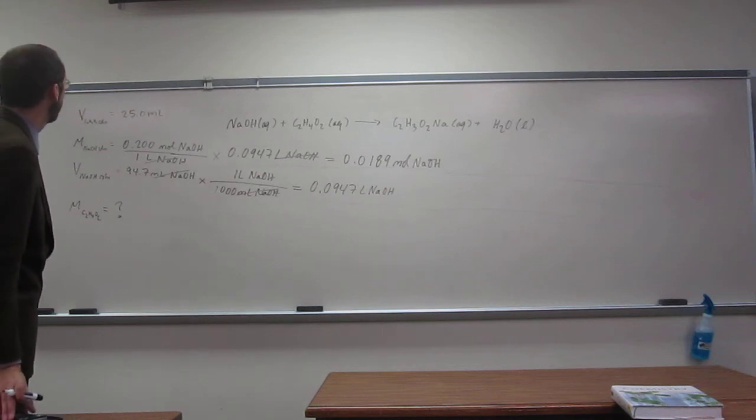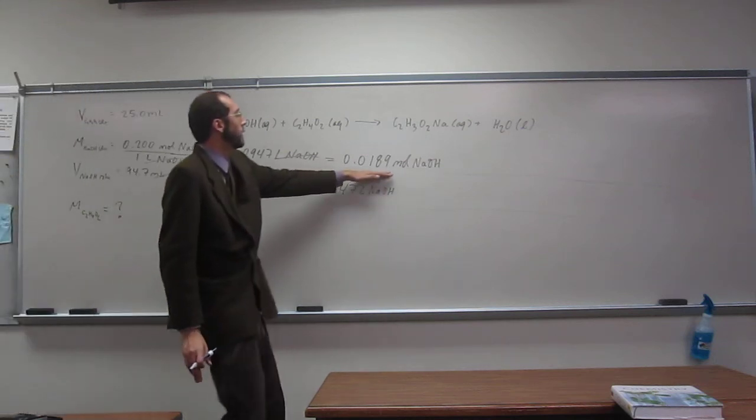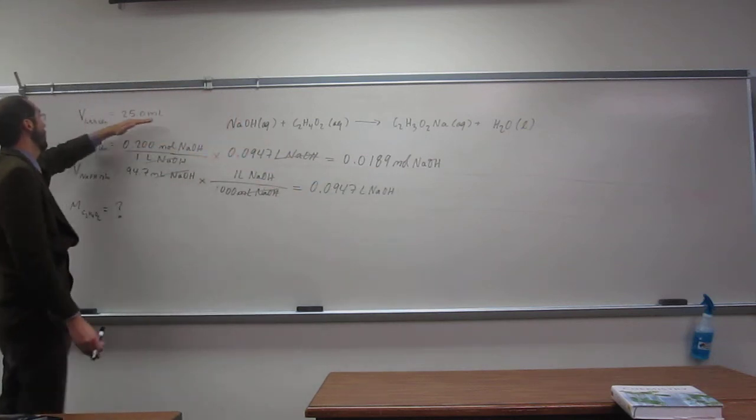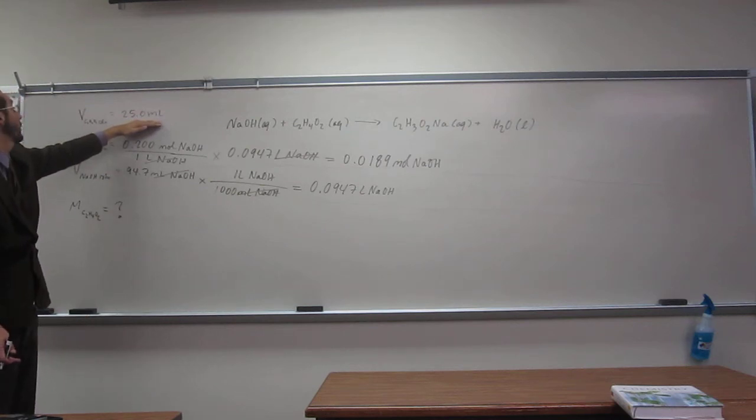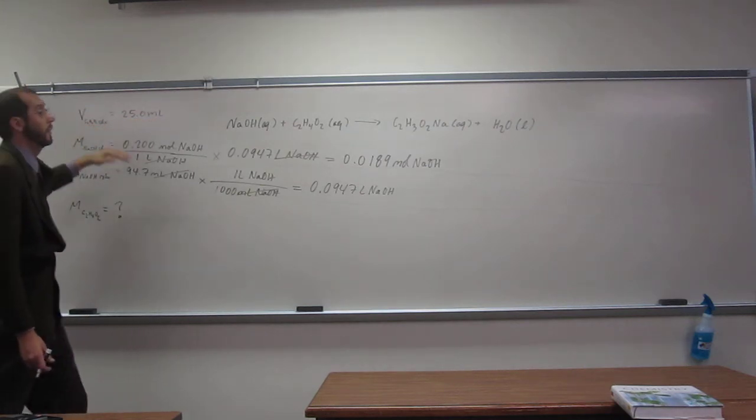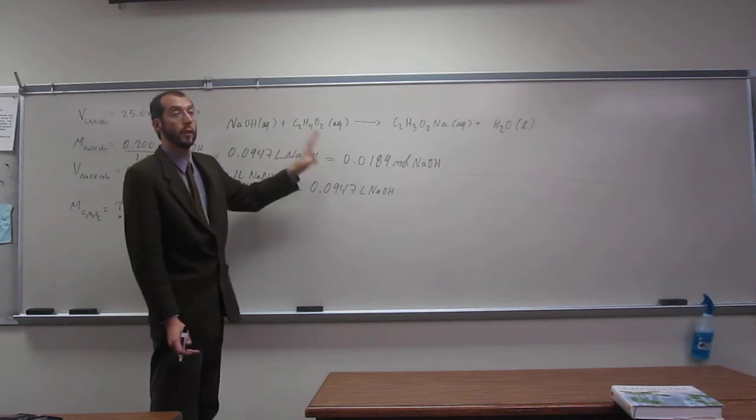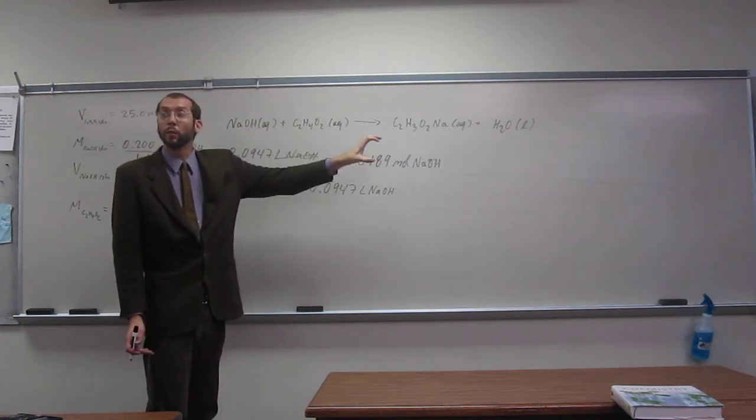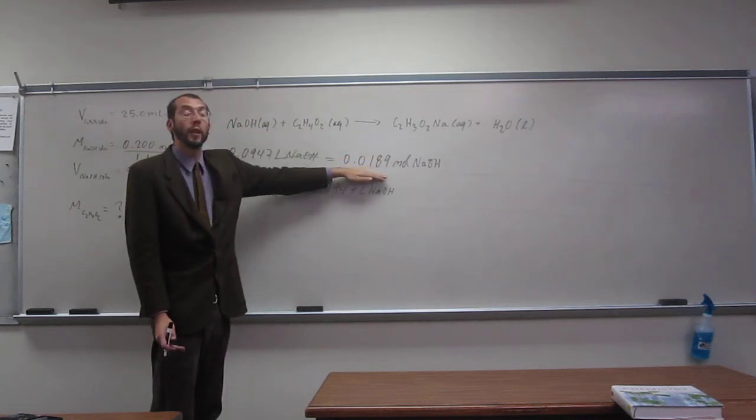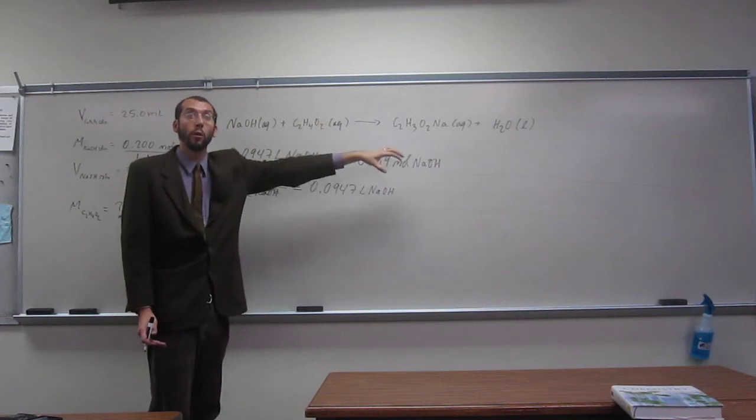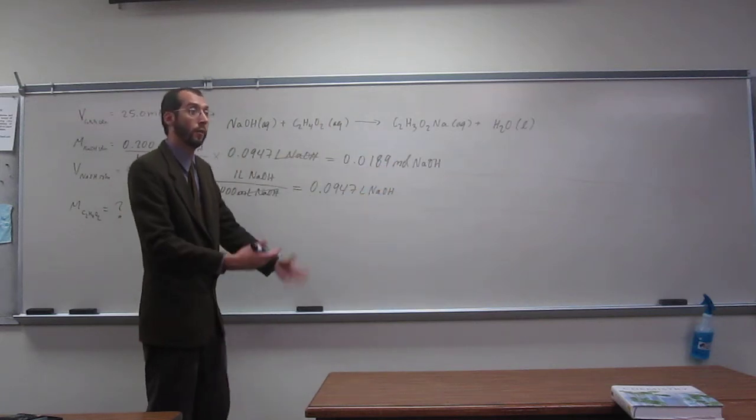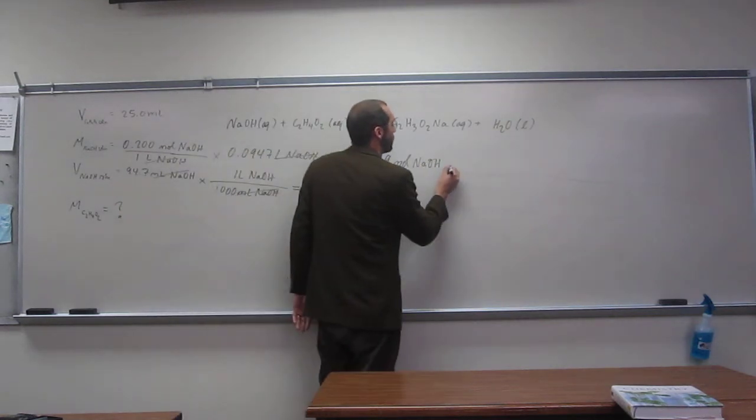So, from here, right? We've got moles of NaOH. We've got the reaction equation and we've got the mLs or volume of acetic acid. So, remember, to get the molarity of acetic acid, we need moles of acetic acid. So, from here, we should be able to get the moles of acetic acid using some conversion factor. So, that conversion factor, of course, you all are about to tell me, is the reaction equation. I know. So, I'll save you the trouble.